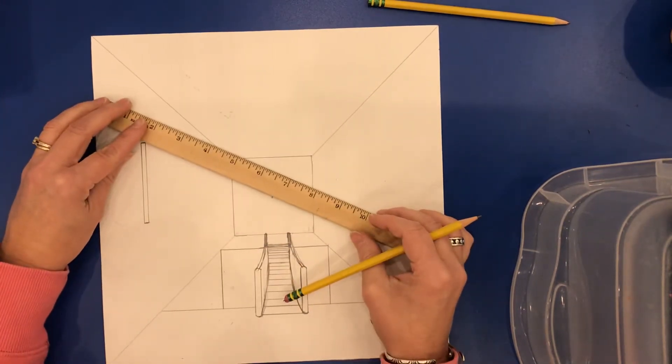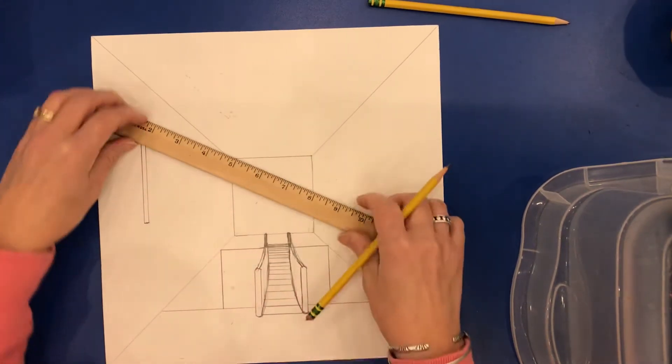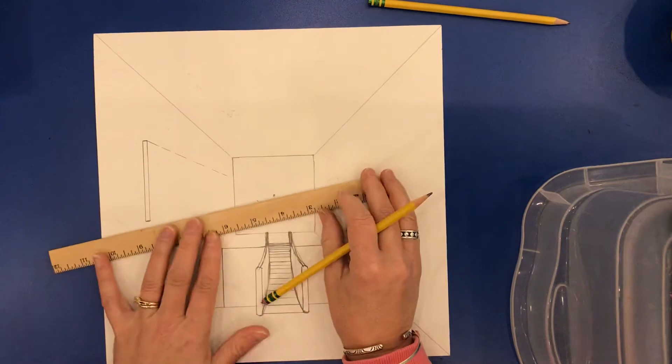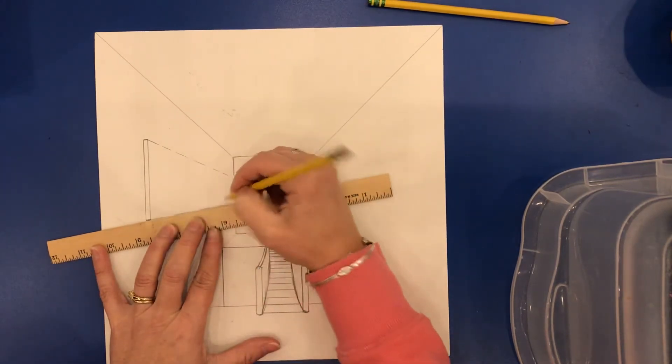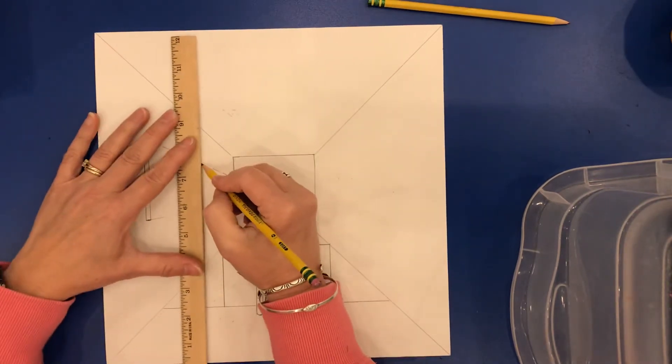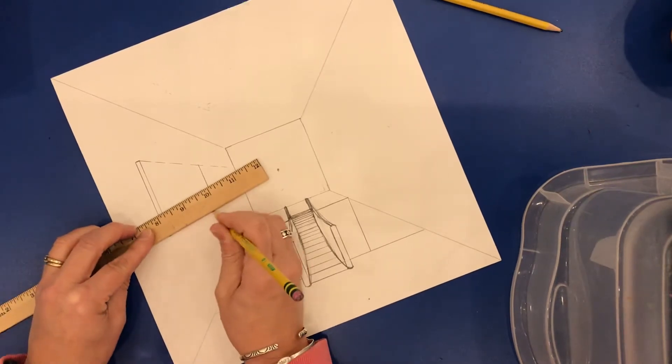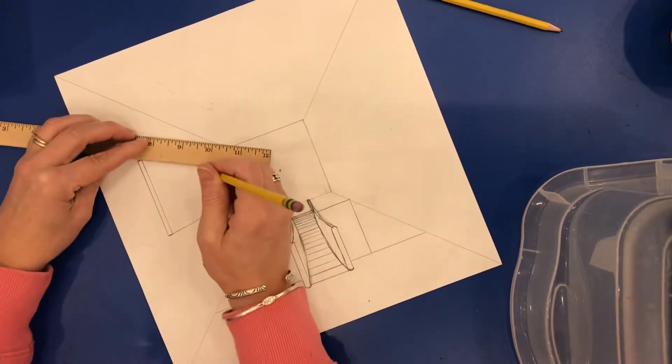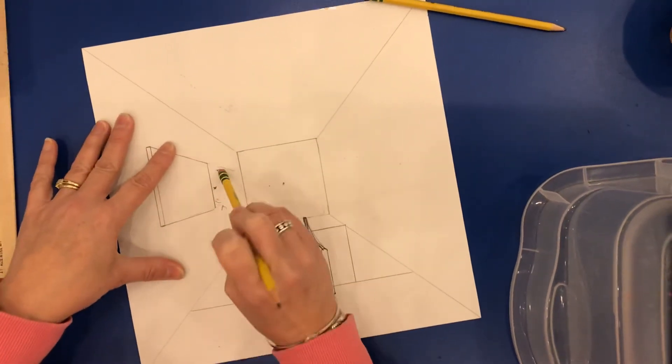So I'm going to take my ruler and I'm going to go back just like I would with a window. That guideline going back. And then I'm going to decide where my artwork is going to end, making sure I'm using parallel lines.